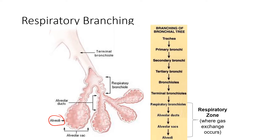From the bronchioles, we travel into these air sacs called alveoli. From the alveoli, we're going to load oxygen into the pulmonary capillaries. Oxygen will travel from pulmonary capillaries to pulmonary venules, pulmonary veins, to the left atrium of the heart, bicuspid or mitral valve, left ventricle, aortic semilunar valve, and aorta. Now we're out for systemic circulation.